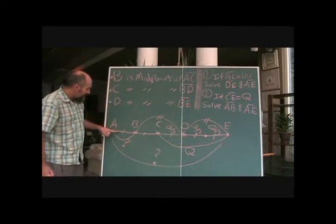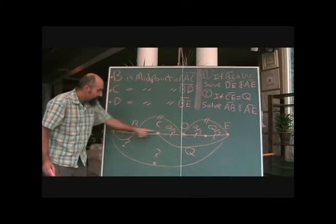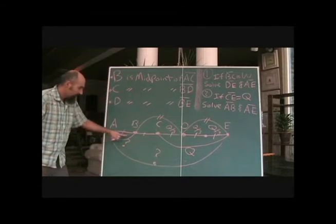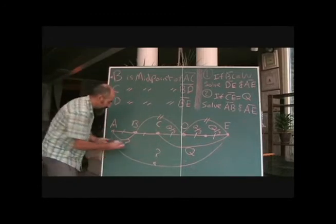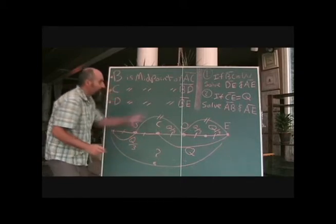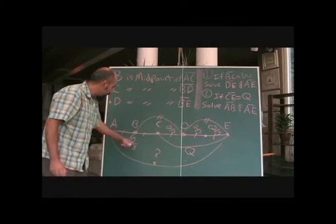When we laid out the problem at the beginning, we knew that this guy was equal to that guy. So if that's Q over 3, that guy is Q over 3. It has to be. So again, we just solved for the first part of the second question. That's Q over 3.